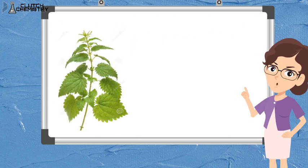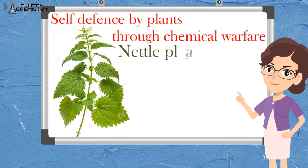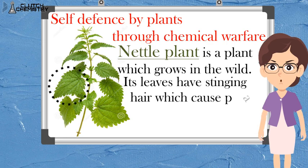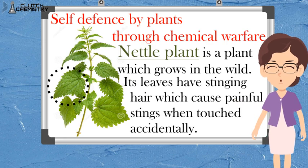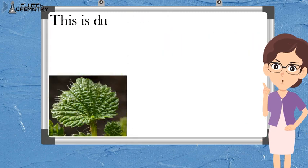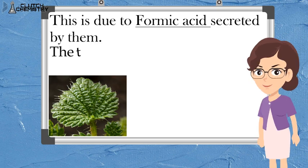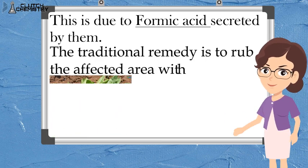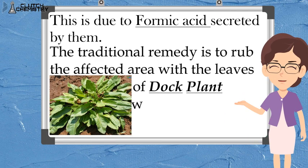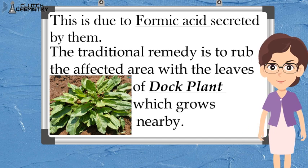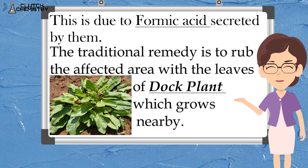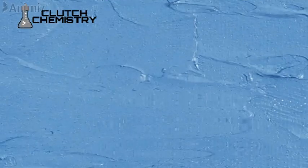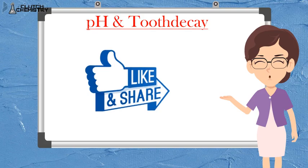Now I want to tell you about a plant — the nettle plant, which is found in forests. If a person comes into contact with its leaves, they experience pain, because formic acid is released from its leaves. But the surprising factor is that near this same plant there is a dock plant, and if we rub its leaves on the affected area, the pain is relieved, because those leaves contain a base that neutralizes the acid.